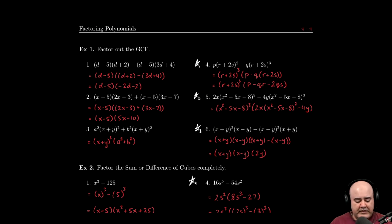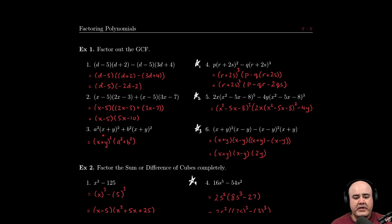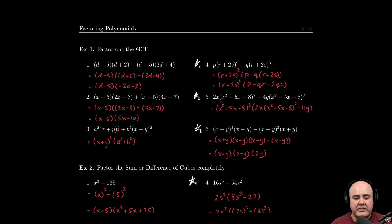Let's continue. In this example we have a squared times x plus y the quantity squared plus b squared times x plus y the quantity squared again. So here hopefully it's a little bit more obvious that x plus y